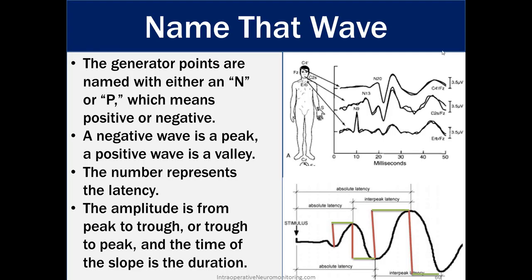Typical waves seen in the OR include ERBs point, which usually comes in at 9 milliseconds as a negative peak — amplitude is measured from top to trough. The N13 comes from a cervical reference to FZ or FPZ, and the cortical response is the N20. We'll dive deeper into all these generator points shortly.